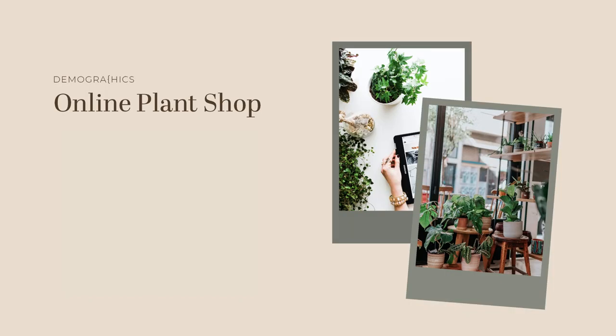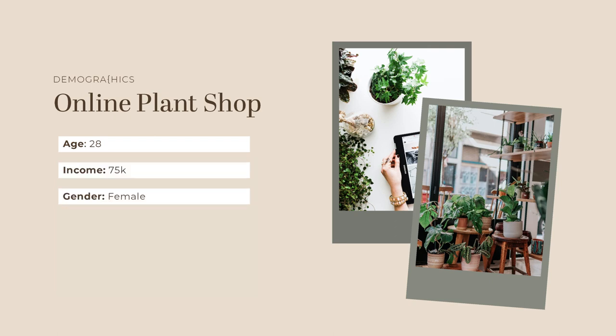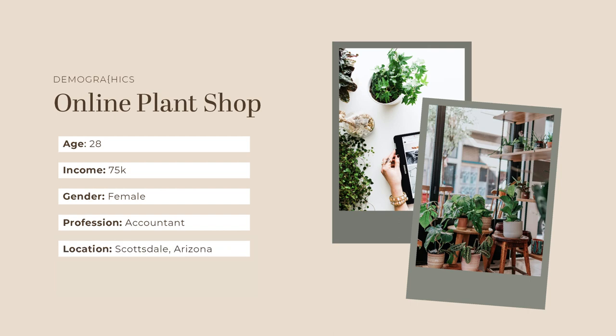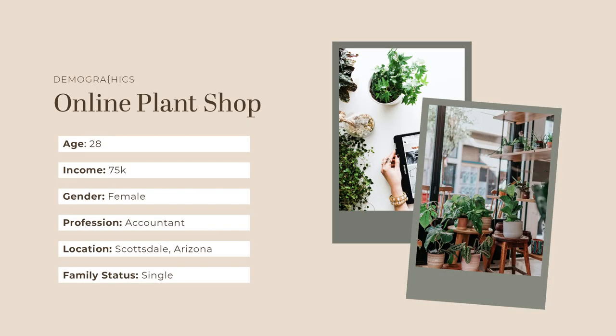Diving into the demographics, we first look at their age. For my example, the user is 28, they have an income level of $75k, they are female, their profession is an accountant, they live in Scottsdale, and their marital status is single. Within this section we're looking at their age, income, gender, profession, where they live, and their marital status. This all helps us to begin to form what this user looks like and get an idea of them in your head.